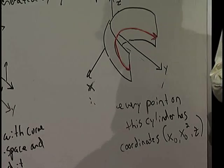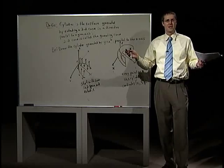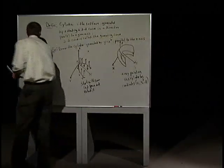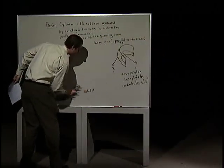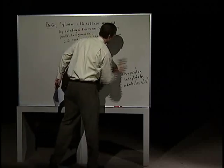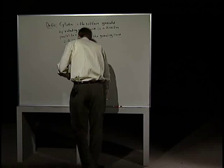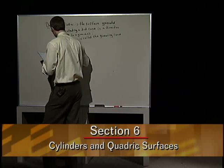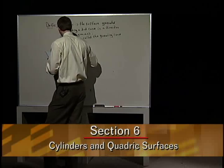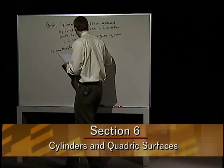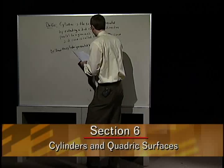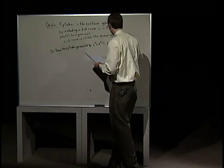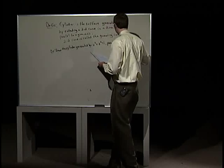Now, our usual definition of cylinder involves something with circular cross-sections — and that applies here too. Let's do another example. Let's draw the circular cylinder generated by x squared plus z squared equals 1, parallel to the y-axis.